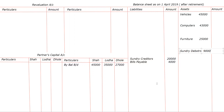Then cash — any adjustment on cash? No adjustment on cash, so we will take it in the outer column. How much? Nine thousand.